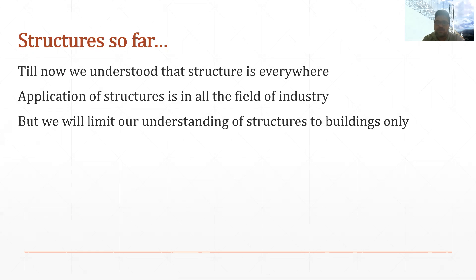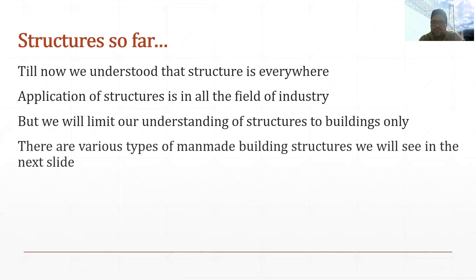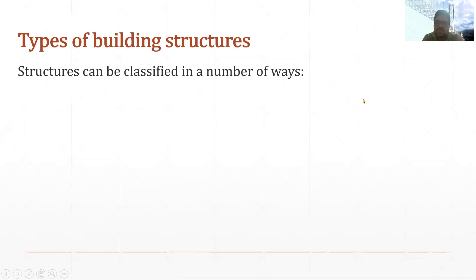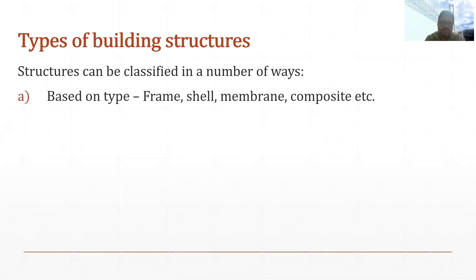There are various types of building structures available in our surroundings, and those buildings can be classified on various bases. I will be showing you some of those bases and giving you a glimpse of various types of buildings. For example, structure can be classified based on type — whether it is a framed structure, a shell structure, a membrane structure, or a composite structure.